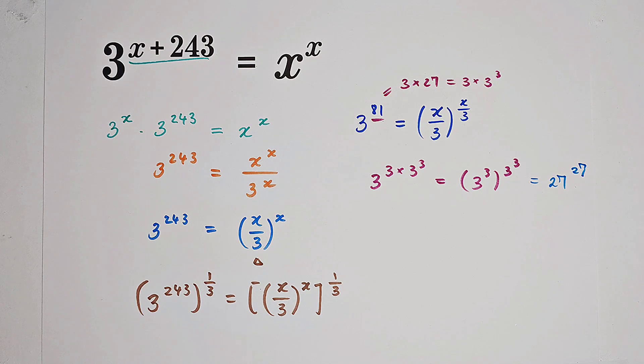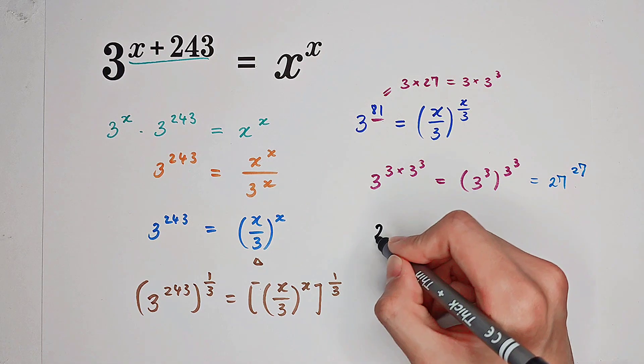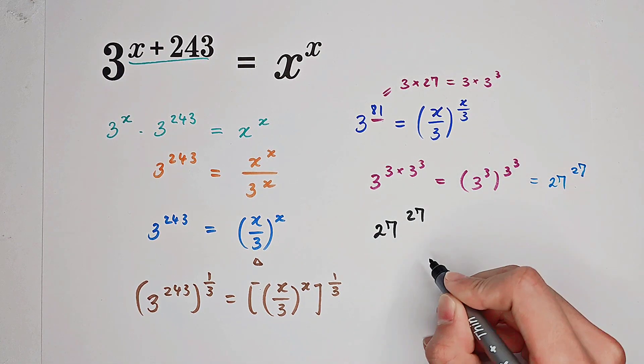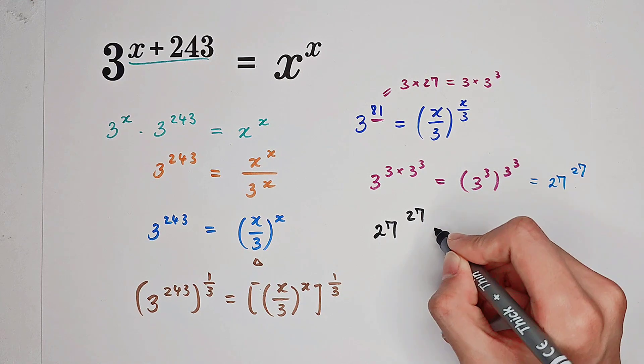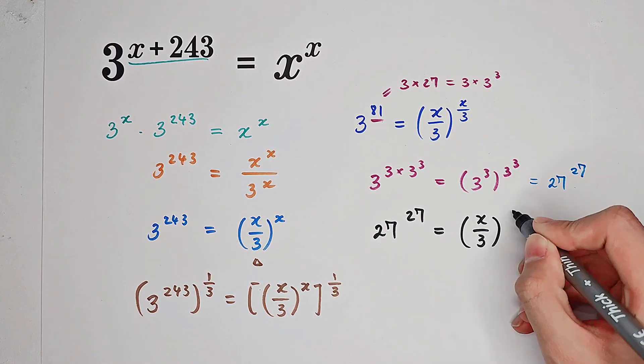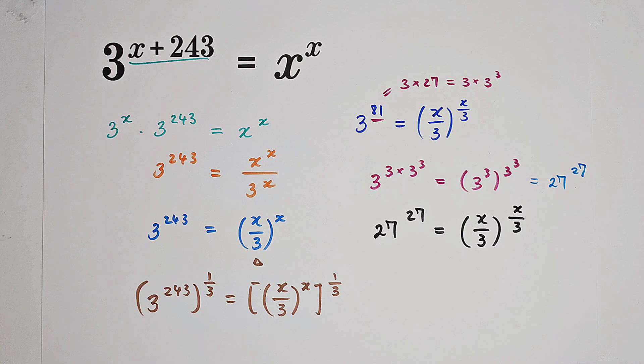So that means we'll end up with an equation: 27 to the power of 27 equals x over 3 to the power of x over 3. What can we conclude?